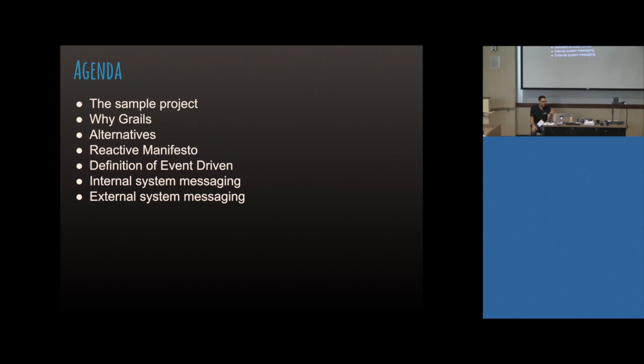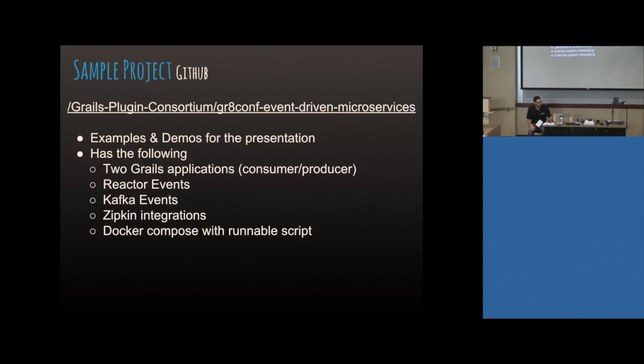There are basically two approaches to doing event-driven systems. There's internal event-driven systems where you're isolated in the scope of your own JVM, doing events inside — particularly I'll talk about Reactor and how you can do an event-driven system. The difference is between doing a singular application event system where you're doing stuff asynchronously inside of itself, versus an external system messaging where you have some technology that sits in the middle of your systems — like Rabbit or Kafka — and you can distribute events and have enterprise-wide reactions to those events.